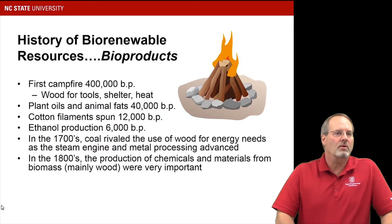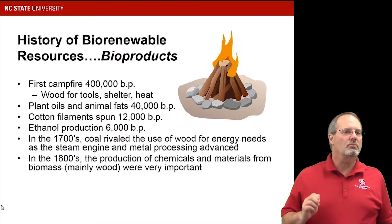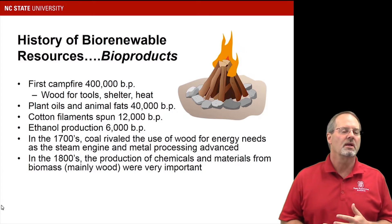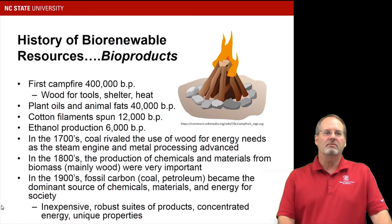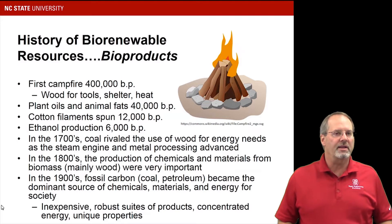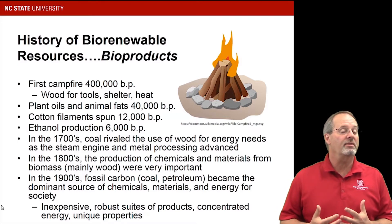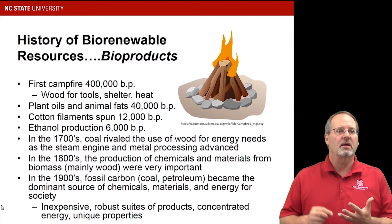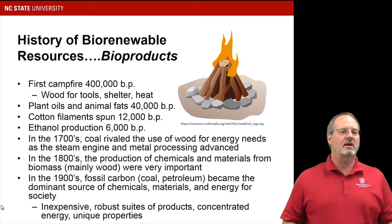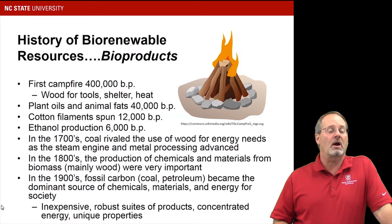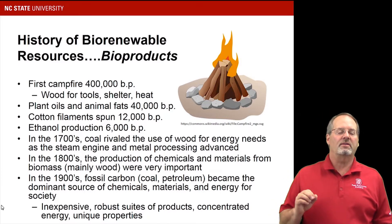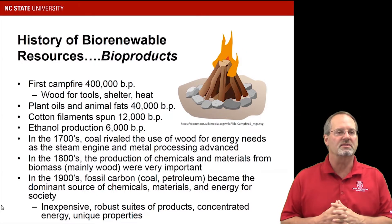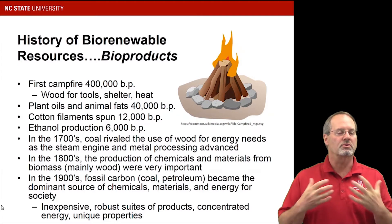In the 1800s, wood was still the main raw material for many chemicals and materials, though coal was about equal with wood for energy. Finally, in the 1900s, oil refining really took off. Once we could refine oil effectively, we could make fuels, chemicals, and plastics — all things that met society's needs. In the 1900s, renewable resources became a smaller fraction of total materials used, as the inexpensive nature, concentrated energy, and unique properties of fossil fuel materials started to dominate.